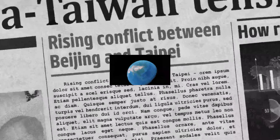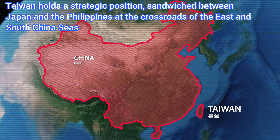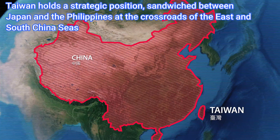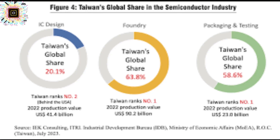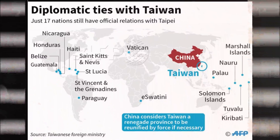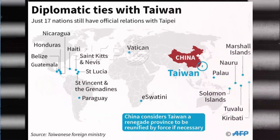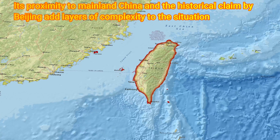But why is this small island in the East Asia Sea causing such tension? Officially known as the Republic of China, Taiwan holds a strategic position sandwiched between Japan and the Philippines at the crossroads of the East and South China Sea. Beyond its geopolitical importance, Taiwan is the leader in the global semiconductor supply chain, with its contract manufacturers contributing over 60% of total global semiconductor revenue. Despite its economic promise, only 13 countries officially recognize Taiwan as a sovereign nation, setting the stage for a complex diplomatic landscape.